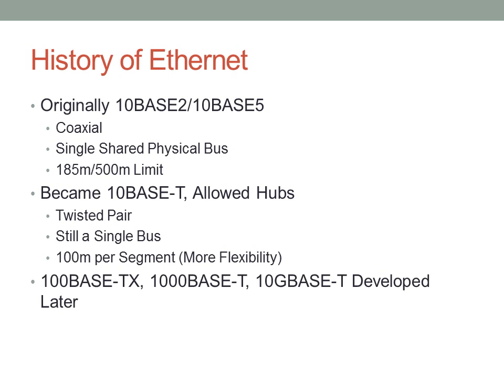Later on, we saw the advent of 100Base-TX, known as Fast Ethernet, and 1000Base-T, known as Gigabit Ethernet. We've also seen 10GBase-T, 10GbE Ethernet, which is still kind of a developing technology. And there are also some other higher-level technologies now, even for 100Gb Ethernet.